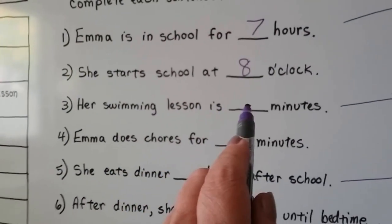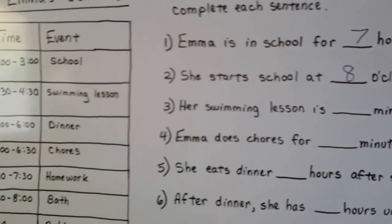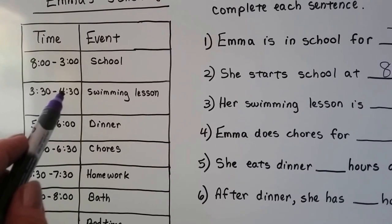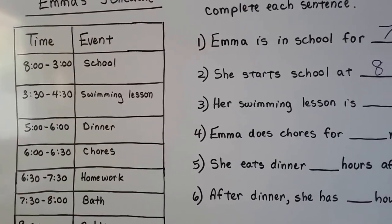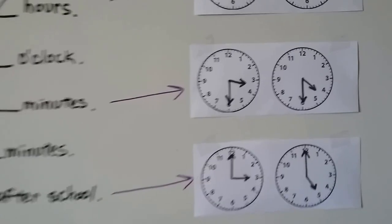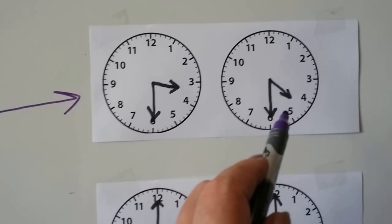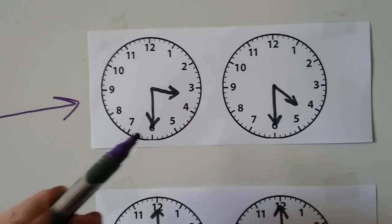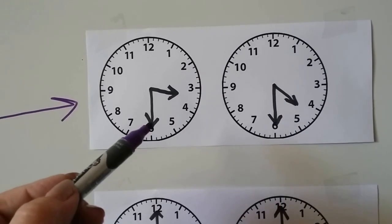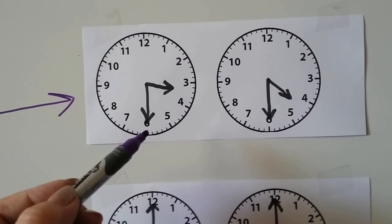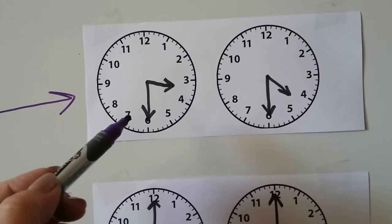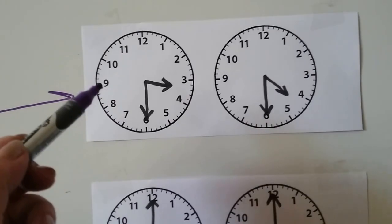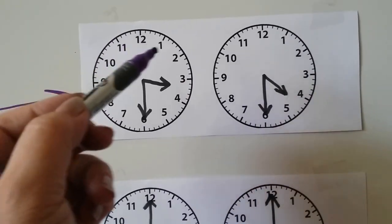Her swimming lesson is blank minutes. Her swimming lesson starts at 3:30 and ends at 4:30. So how many minutes are those? Here's 3:30 and here's 4:30. So how many minutes went by? We can skip count by fives. If it's already pointing here, we'll start skip counting with the 7, and we're going to count by fives for each hour number.